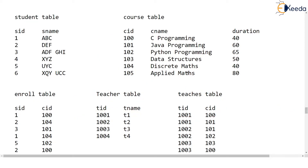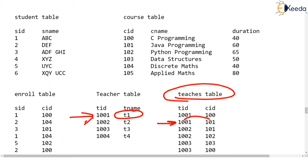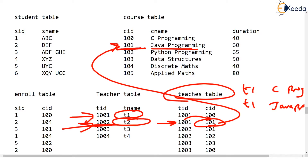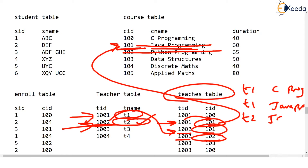Looking further, 1001 also teaches one more subject in the teachers table — 1001 is recorded to teach course 101, which is Java Programming. So t1 teaches C Programming and t1 teaches Java Programming. Now for 1002, the name is t2. 1002 teaches two subjects: 101 and 102. Course 101 is Java Programming and 102 is Python Programming, so t2 teaches Java and t2 teaches Python.